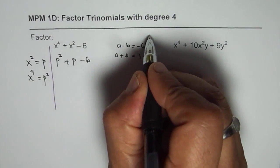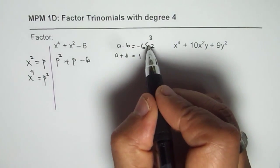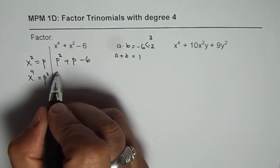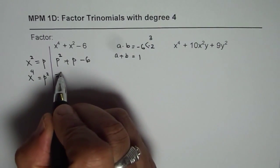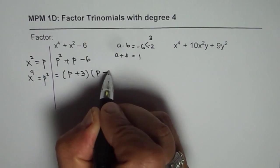These two numbers are 3 and 2. The higher one will be positive, the lower one negative. So we can factor this as (p + 3)(p - 2).